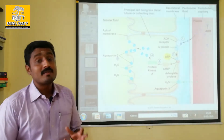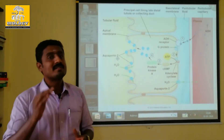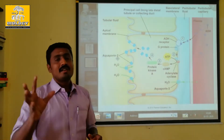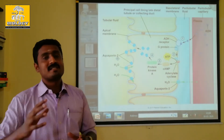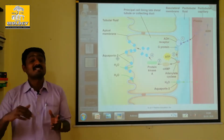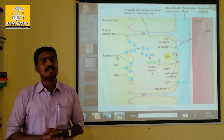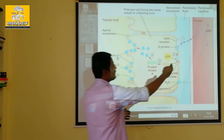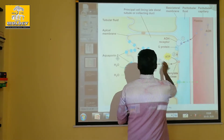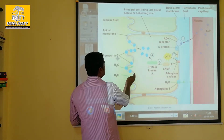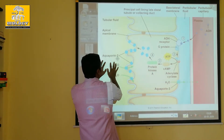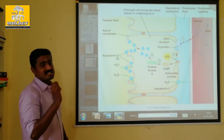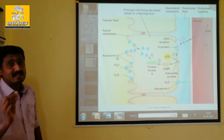Osmoreceptors activate. That is why it is activated. Neurohypophysis produces ADH. ADH comes from the bloodstream. Aquaporin is produced in the renal filtrate.